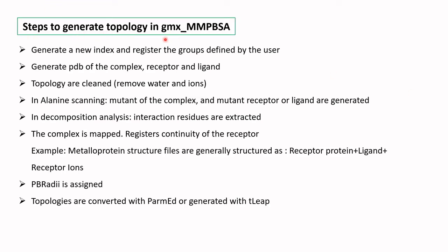The steps to generate topology in GMX MMPBSA are: generate a new index file and register the groups defined by the user, then generate a PDB file of the complex, receptor, and ligand. The topology must be clean — water and ions must be removed. In alanine scanning, mutants of the complex and mutant receptor-ligand are generated; in decomposition analysis, interaction residues are extracted. The complex is then mapped, receptor continuity is registered, PB radii are assigned, and topologies are converted with parmed or generated with tleap.